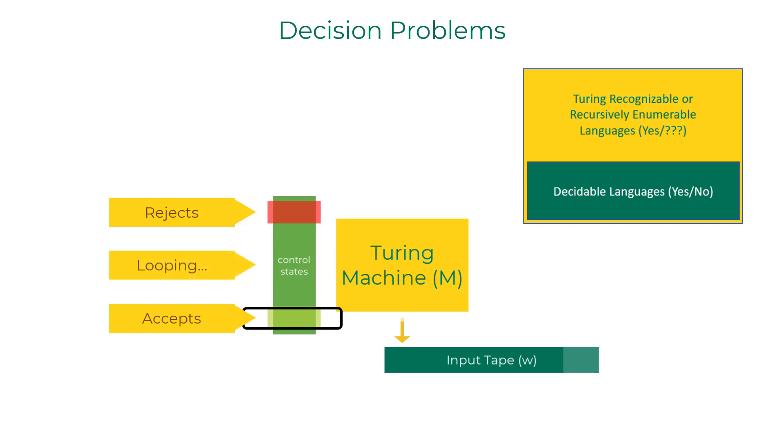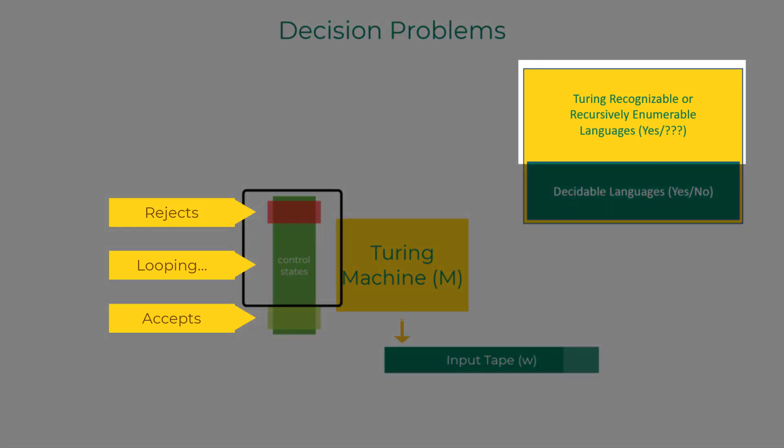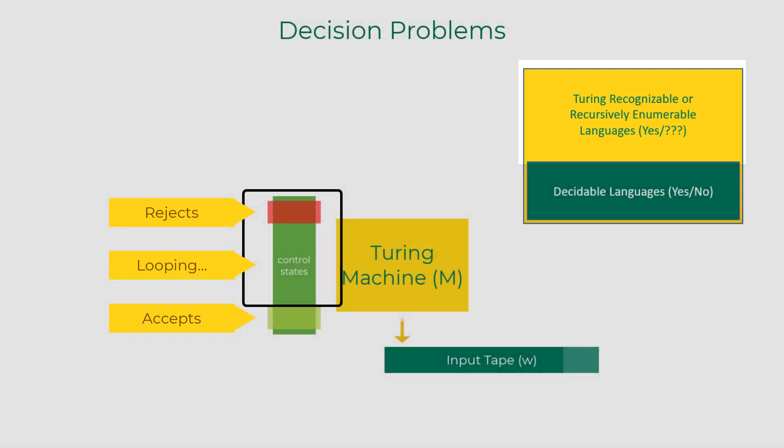but may end up in reject state or loop forever on strings that are not in the language. So you cannot get a definitive no for the strings that are not in the language. Such languages are called Turing recognizable or recursively enumerable languages because at least you will get a yes for the strings that belong to the language.